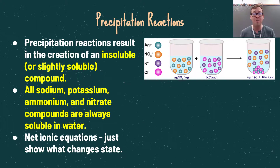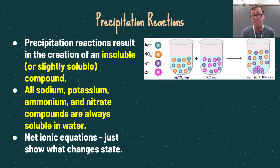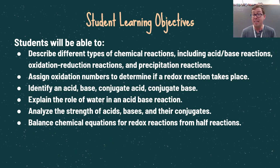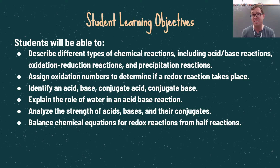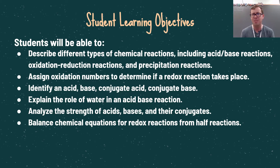As we wrap up this video, it is very important to identify the three different types of chemical reactions: acid-base reactions, which are a transfer of a proton; redox reactions, which are a transfer of electrons; and precipitation reactions, which create an insoluble compound that is solid in an otherwise aqueous solution. Make sure you're able to fully identify those types of reactions, assign oxidation numbers, identify acids, bases, conjugate acids, and conjugate bases, understand the role of water in an acid-base reaction, analyze the strengths of acids and bases, and balance redox reactions from half reactions. Hope you enjoyed the video — like, comment, and subscribe, and we'll see you very soon!